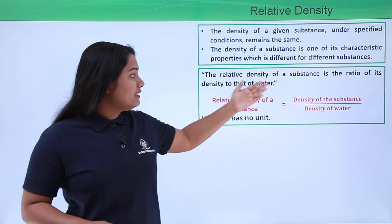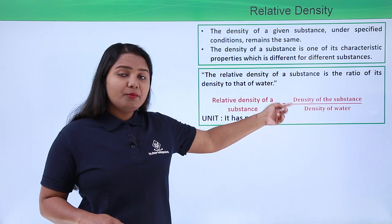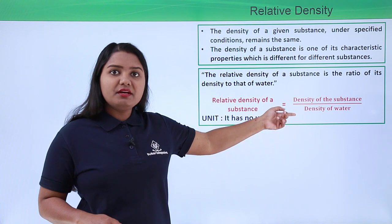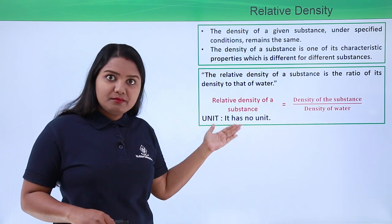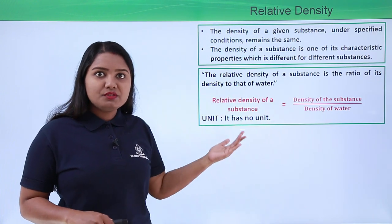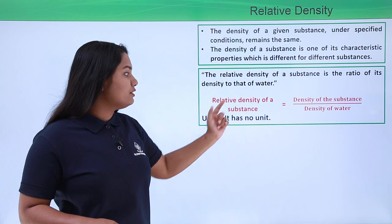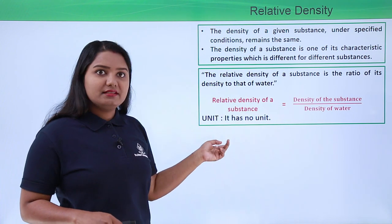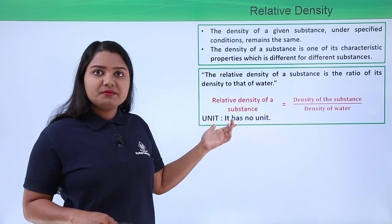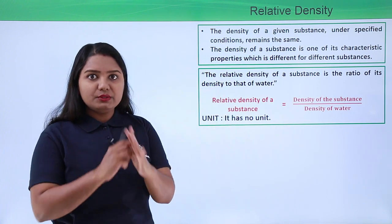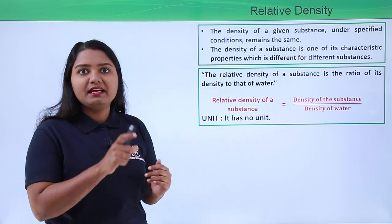In both the numerator and denominator of this formula we have density, so their units are the same and they cancel out, leaving the relative density to be unitless. So the relative density of any substance is unitless — it has no unit at all. It is simply a number.